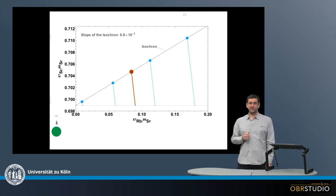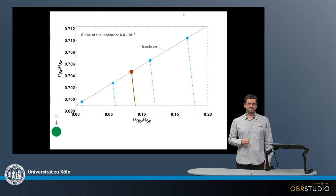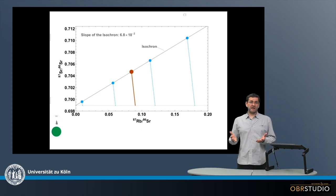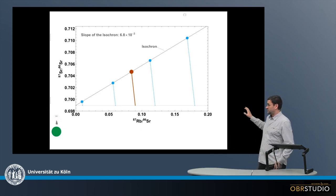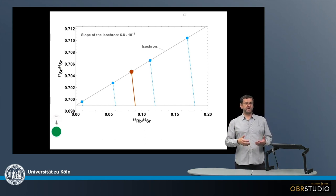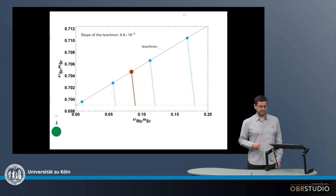This illustrates the isochron plot of a long-lived decay system. Long-lived means that the half-life is longer than about a hundred million years. The decay system shown here is rubidium-87 decaying to strontium-87 with a half-life of 48.1 billion years — so clearly a long-lived system.